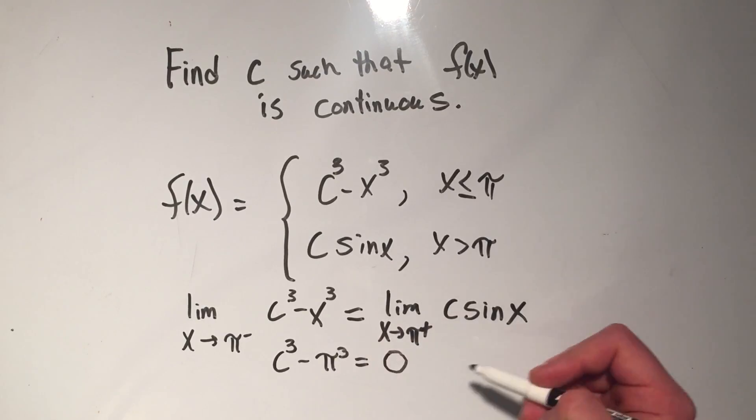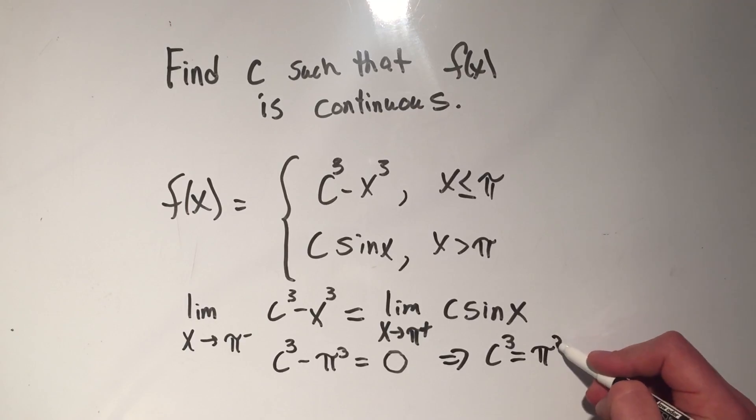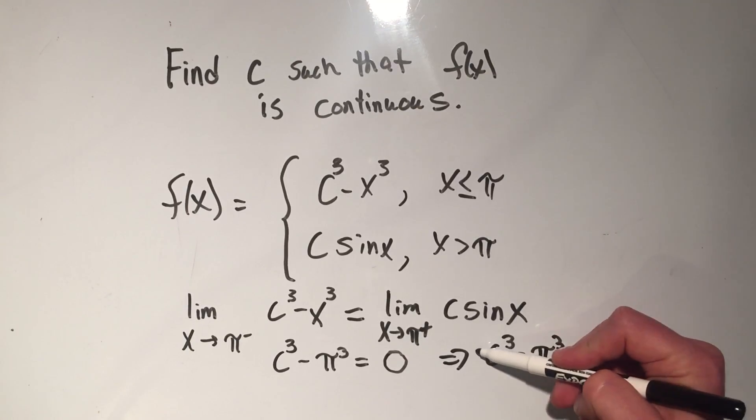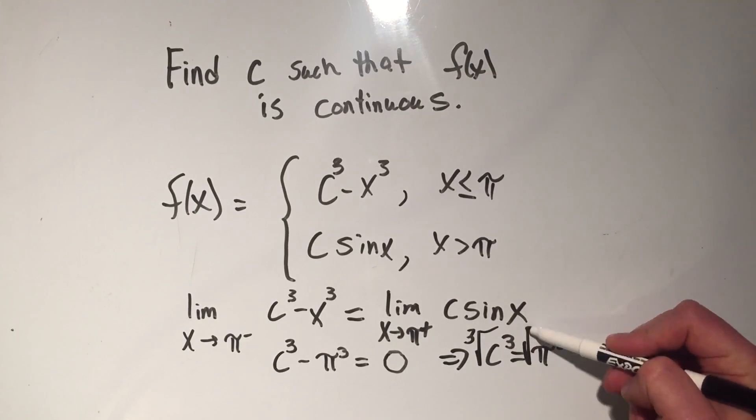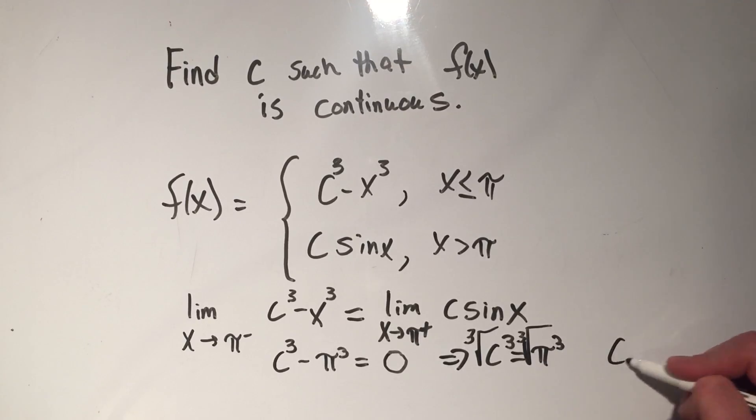And luckily, this isn't too hard. If I just add pi cubed to both sides, I'll get c cubed equals pi cubed. And then if I cube root both sides of that equation, I'm going to get c equals pi.